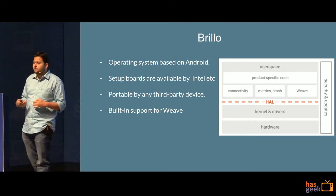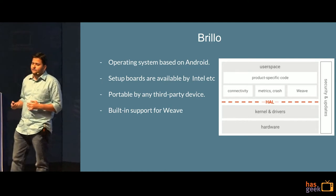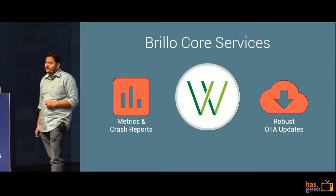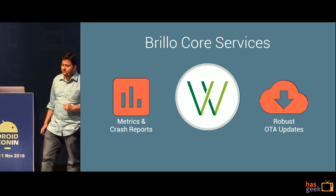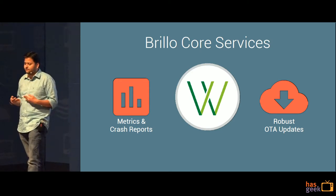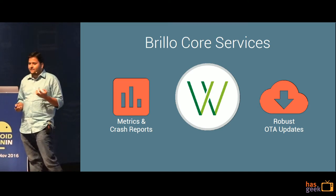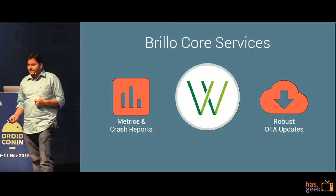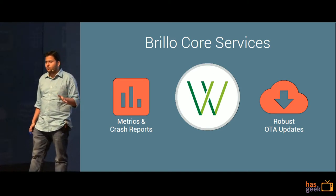Brillo has built-in support for Weave. Weave handles communication across devices — if you have ten Brillo and IoT-based devices in your home, Weave takes care of them communicating with each other. Moving to core services: we'll understand metrics and crash reports, Weave itself, and what OTA updates offer. Whenever you launch a product, you want to understand how it's performing over time, what user behavior the device is encountering, and in what scenarios the device fails. These come under metrics and crash reports and can be tracked in the Weave developer console so manufacturers can make business decisions.